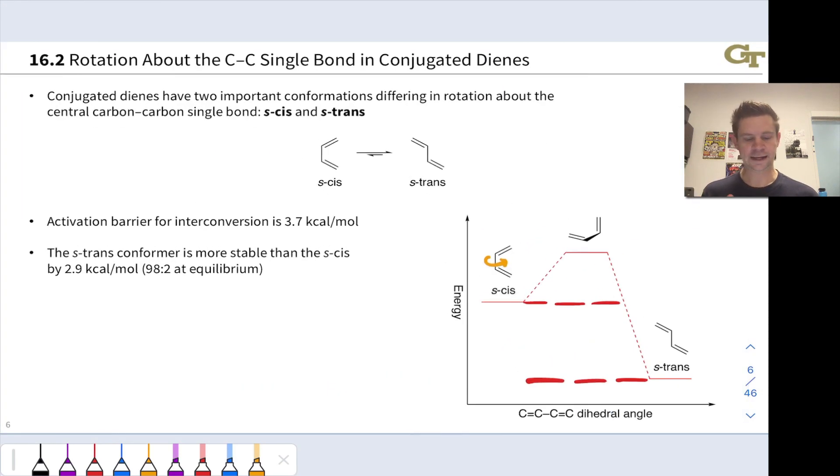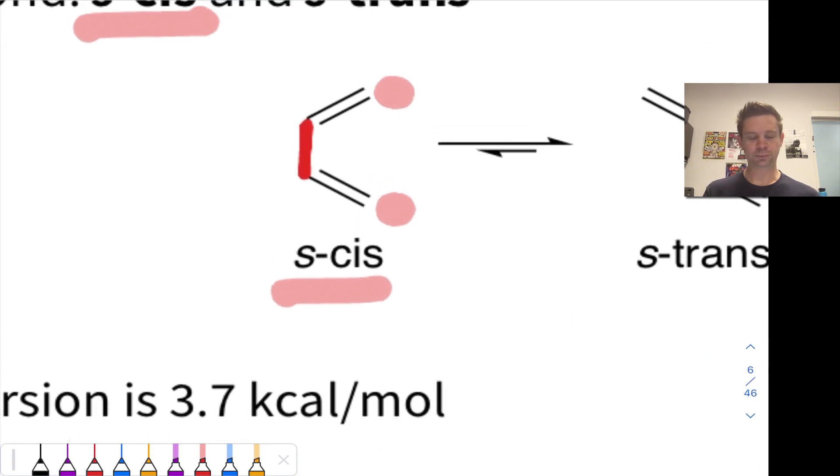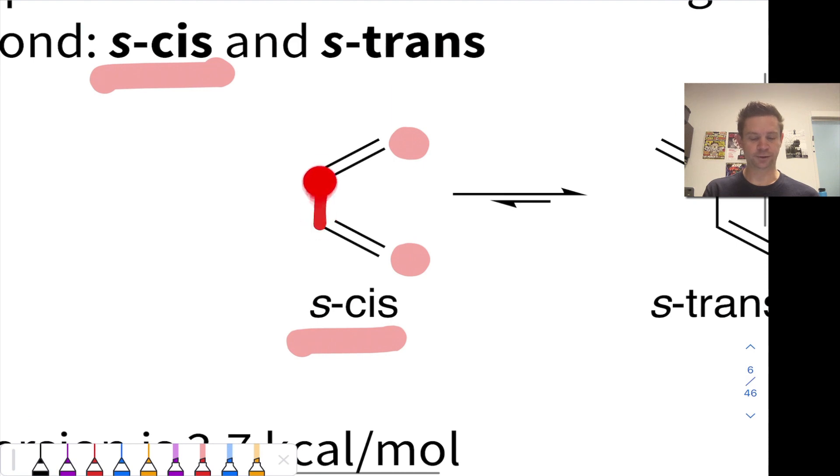They're called S-cis and S-trans, and we'll see why shortly. First, let's look at the S-cis conformation. In the S-cis conformation, the two double bonds are on the same side of the single bond. If we highlight the single bond here in red, both CH2 groups on the ends of these double bonds are on the same side of that single bond.